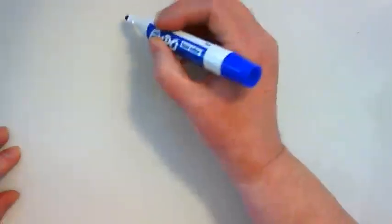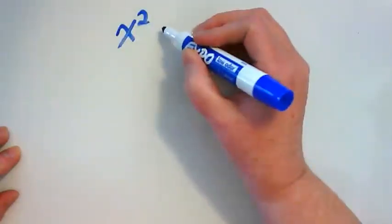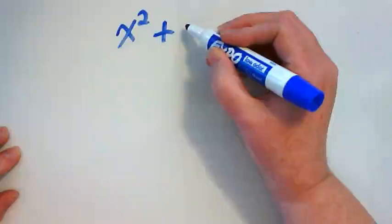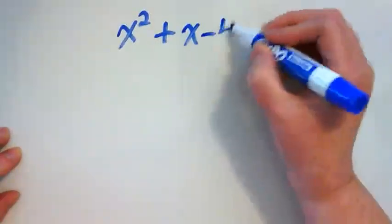In our class meeting today, we had some questions about the work for this week where we're factoring quadratics. One of the questions that was brought up was about number 8 on the assignment, which reads x squared plus x minus 42.